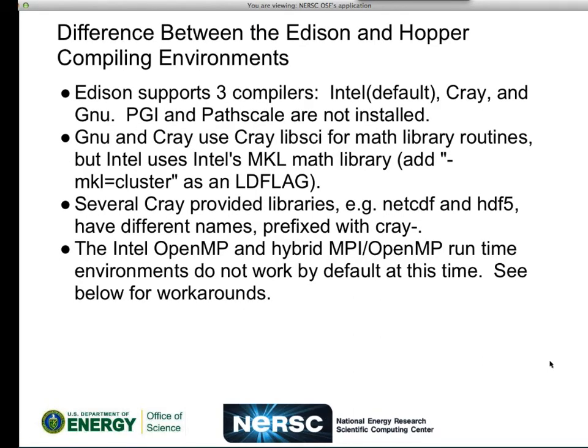When you log on to the system and start compiling and running, here are the differences you will notice. Edison supports three compilers, three programming environments: Intel, which is the default — differently from Hopper and Franklin — Cray, and GNU. Our PGI and PathScale compilers will not be installed on the system. I didn't think anybody was using PathScale, but I got a request today from somebody who wanted us to port the PathScale 5.0 beta compiler to Hopper, so there are people out there who still use it.